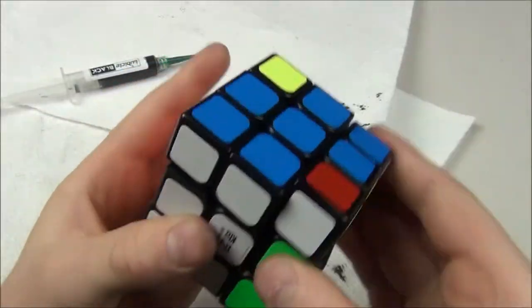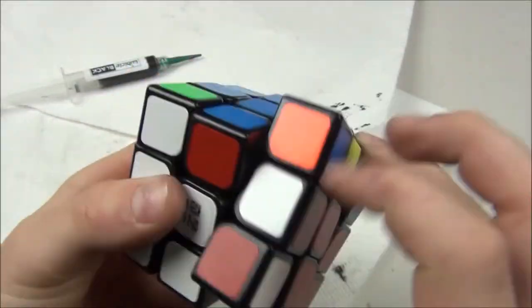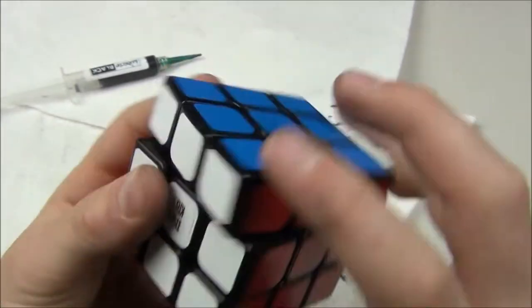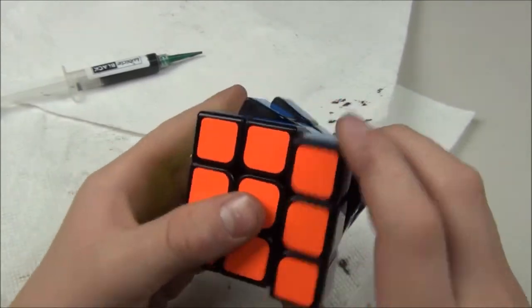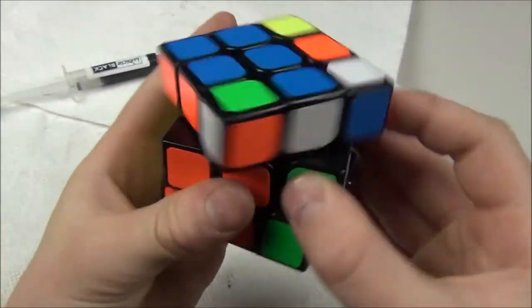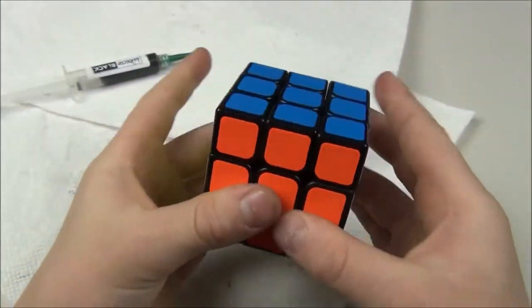Alright. So I went ahead and solved it and you can just see how well this Qi Yi Sail performs. And keep in mind, this is a Qi Yi Sail. It's a $5 budget puzzle designed for people who are trying to get a half decent speed cube for a good price.